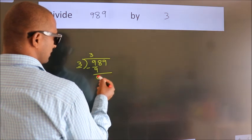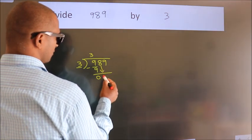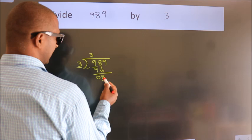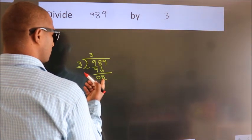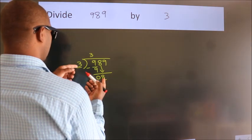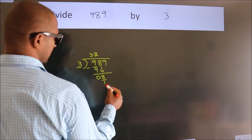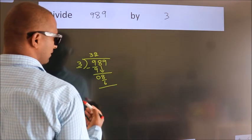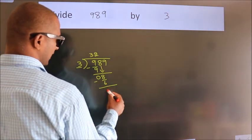After this, bring down the beside number. So, 8 down. A number close to 8 in 3 table is 3 twos, 6. Now, we subtract. We get 2.